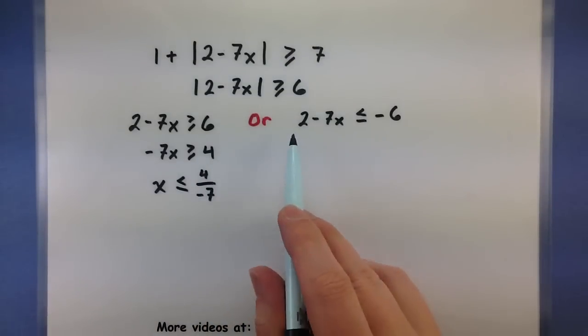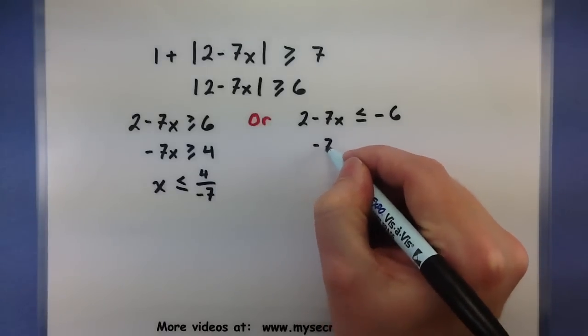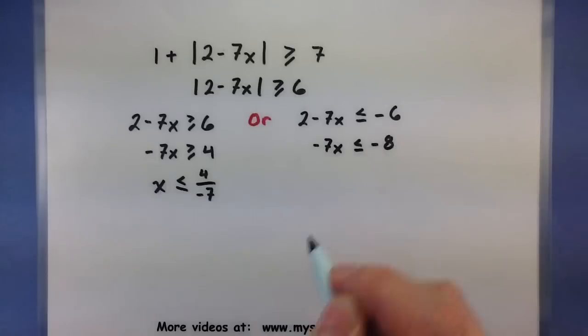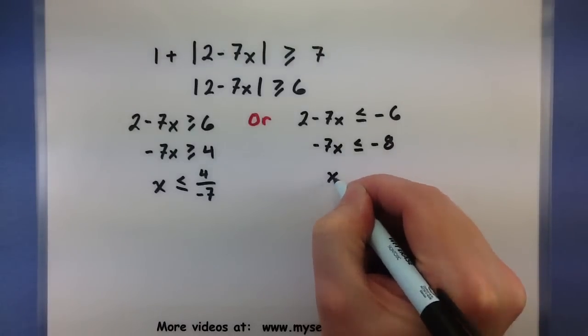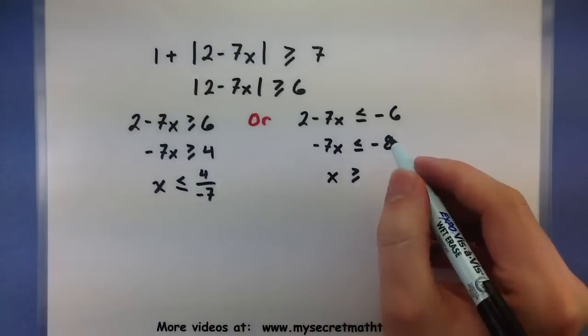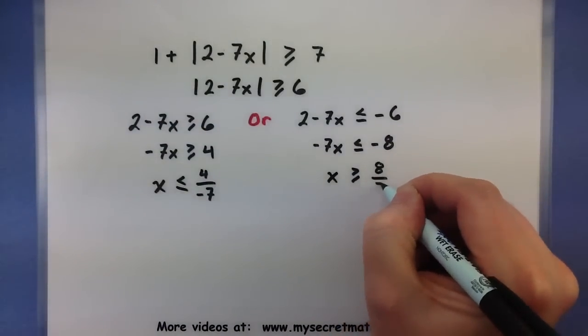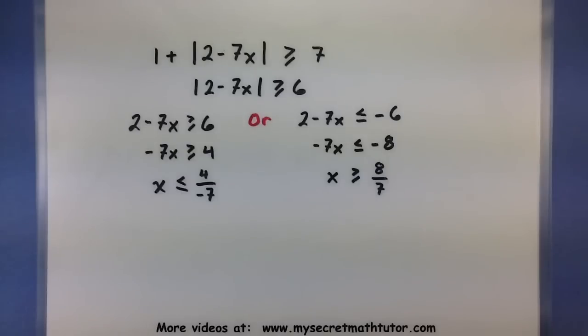I'll subtract the 2 over here, negative 8. And again, I will divide by a negative 7, remembering to flip my sign. So negative 8 divided by a negative 7, positive 8 sevenths. Alright, so who gets to be a solution in this case?